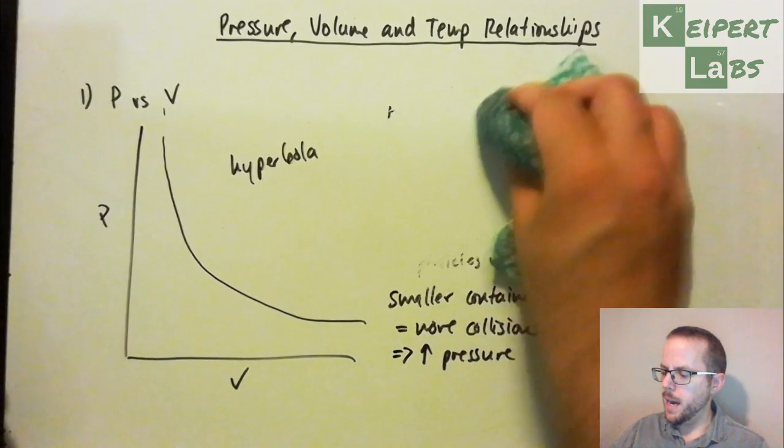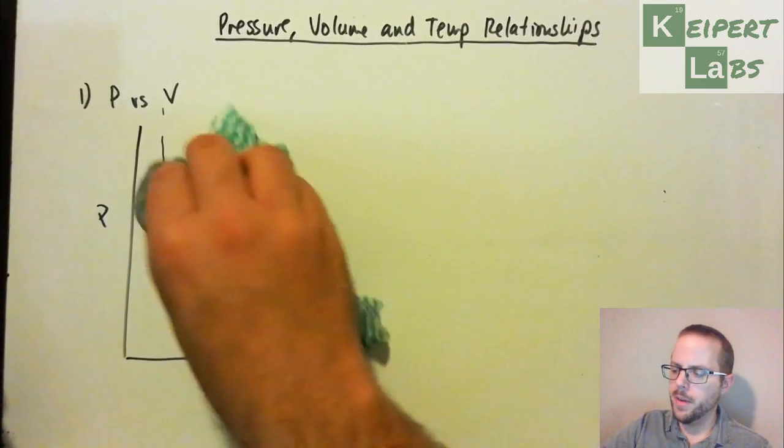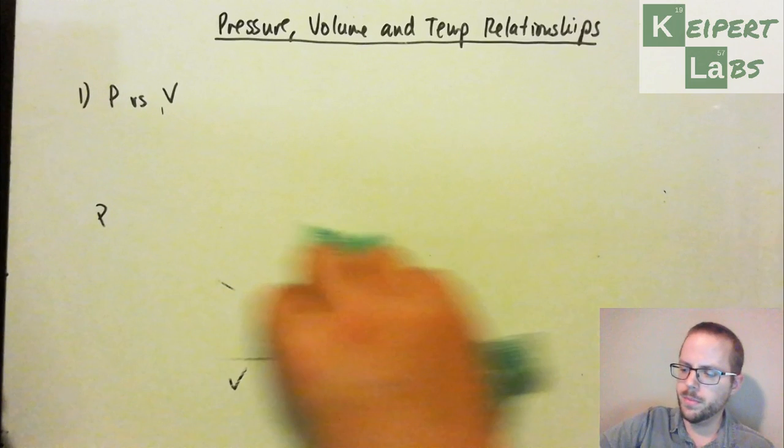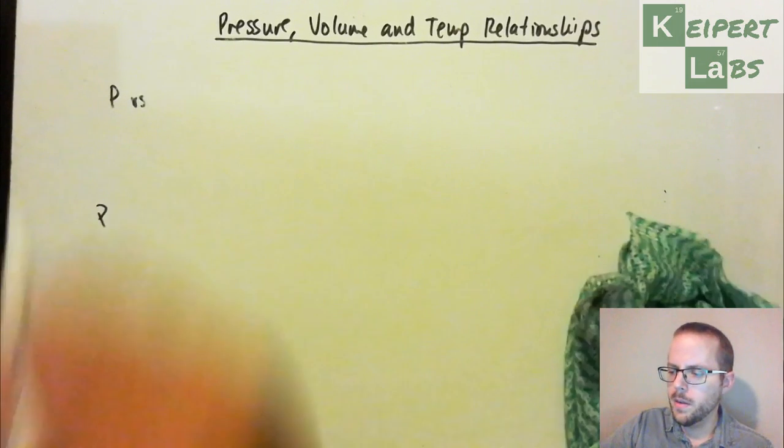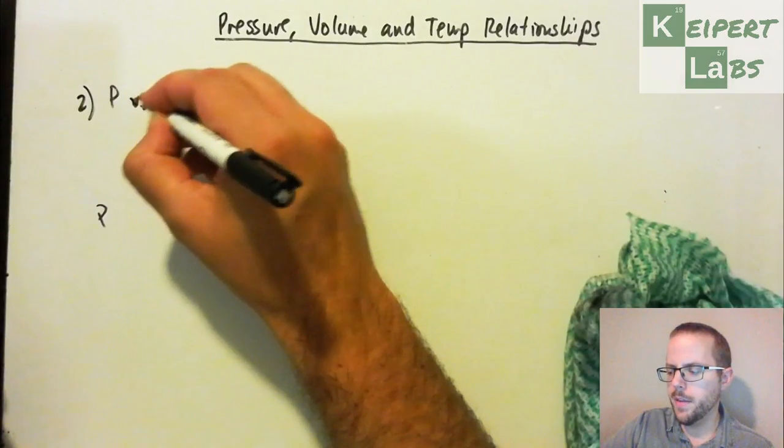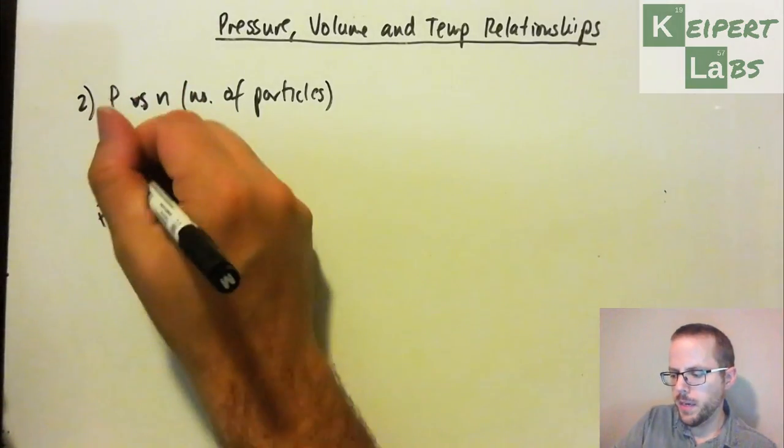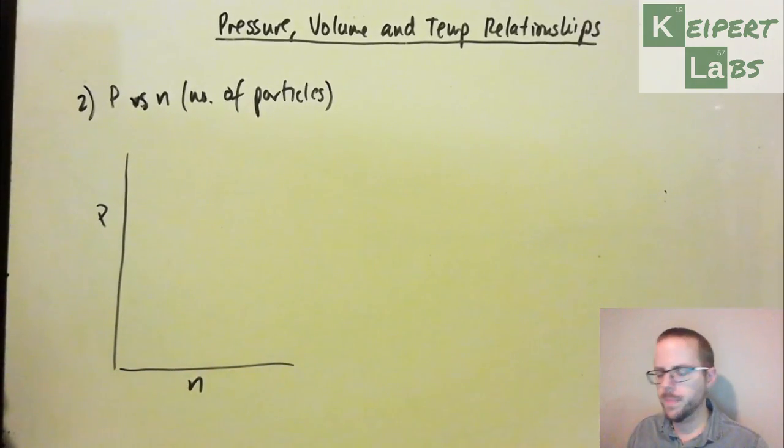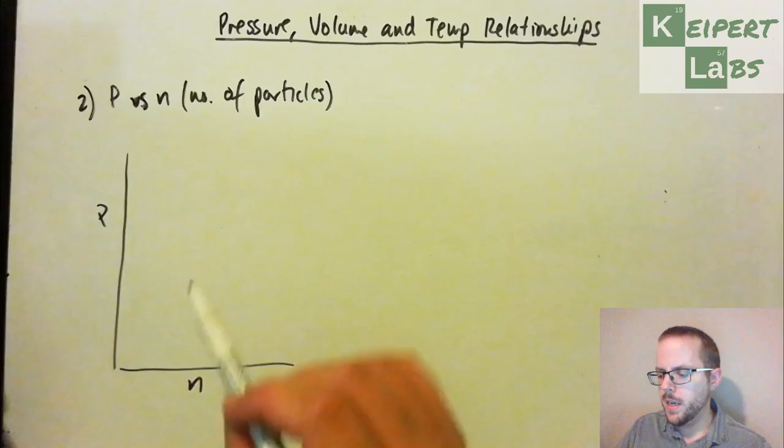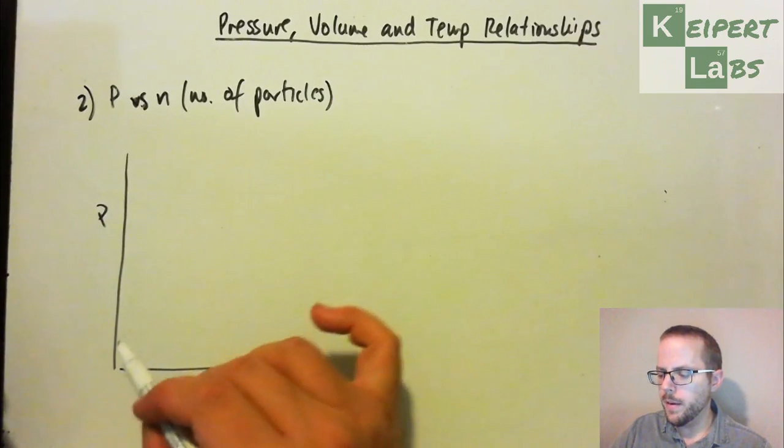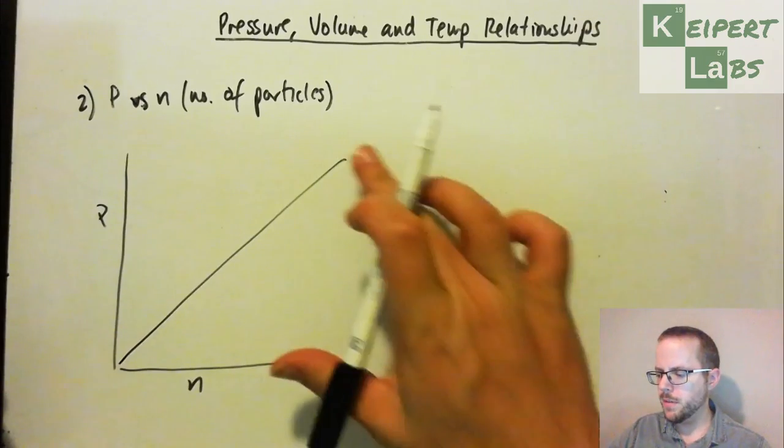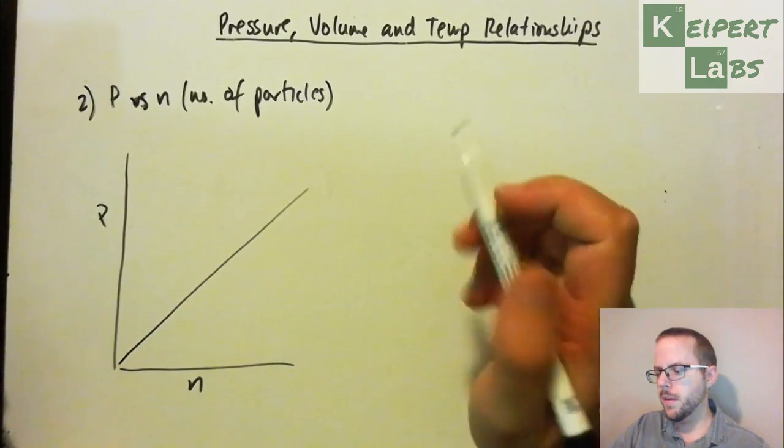Let's have a look at this now, in terms of pressure versus number of particles. Pressure versus n, number of particles. So we'll set up our set of axes like this. And so what you would have seen is that we would get a line that looks like this.